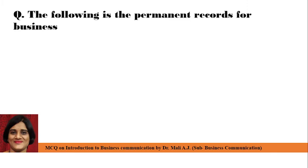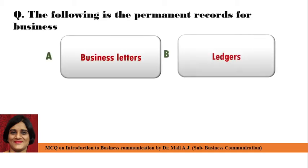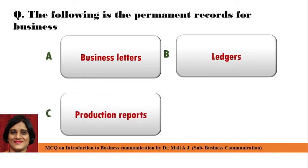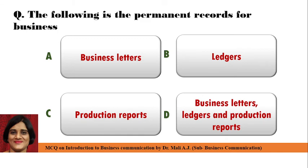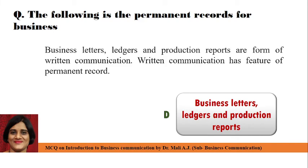Next question: The following is the permanent record of business — Point A: Business Letters, Point B: Ledgers, Point C: Production Reports, and Point D: Business Letters, Ledgers, and Production Reports. Correct answer is Point D: Business Letters, Ledgers, and Production Reports are the permanent records of business. Because these are forms of written communication, which has the feature of permanent record.